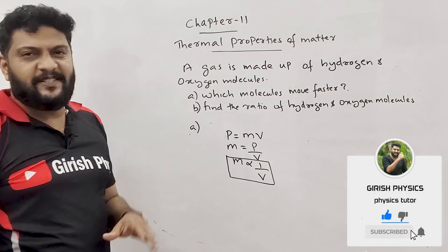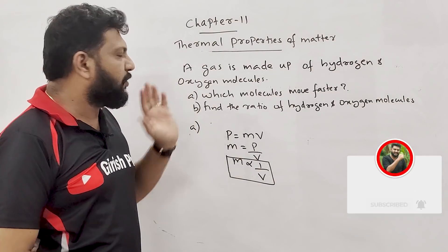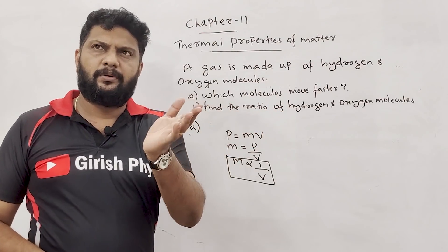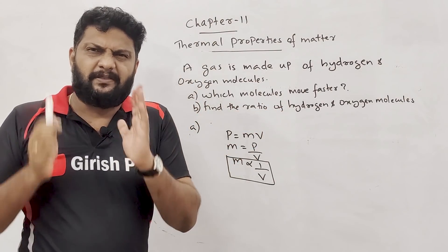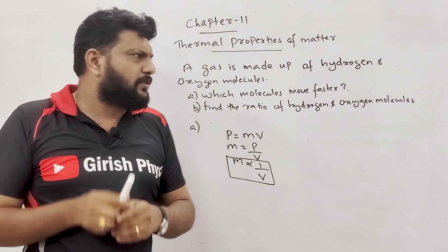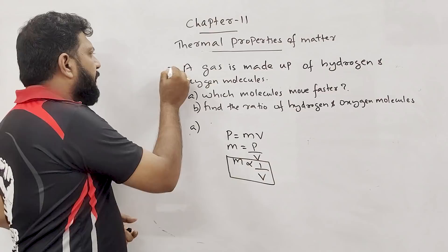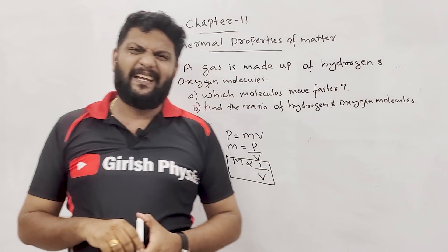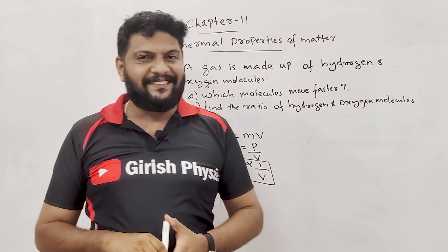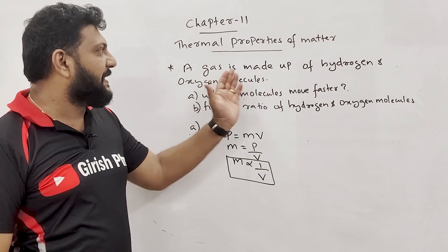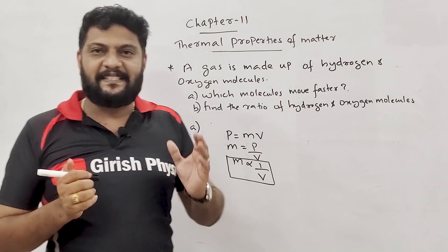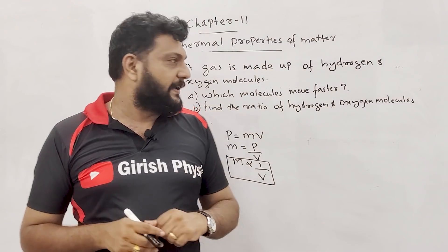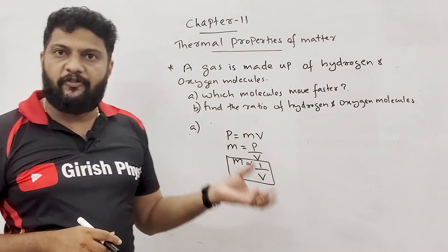The last question: a gas is made up of hydrogen and oxygen molecules. A gas is made up of hydrogen molecules and oxygen molecules. Which molecules move faster?